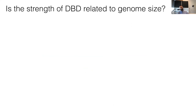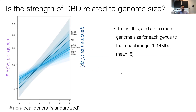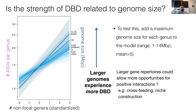We also asked whether the strength of DVD is related to genome size. We added a representative genome size for each genus into the model and found that larger genomes experience more DVD — a focal genus with a larger genome has an increased diversity slope, meaning its diversification rate in response to community diversity increases more with larger genome size. This may be because bacteria with larger gene repertoires have more opportunities for positive interactions like cross-feeding and niche construction, leading to stronger DVD.